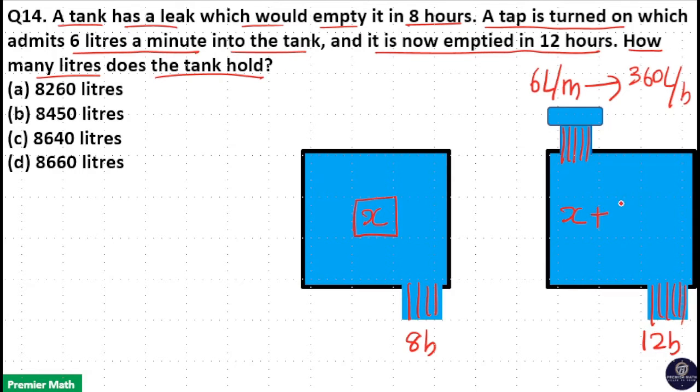So in 12 hours, 12 times 360 liter of water is filling by this pipe. So in 12 hours, x plus 12 times 360 liter of water is emptying by this leak.